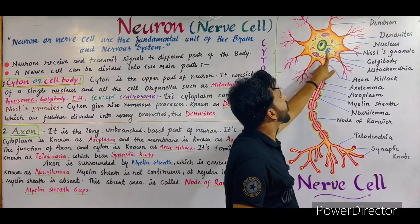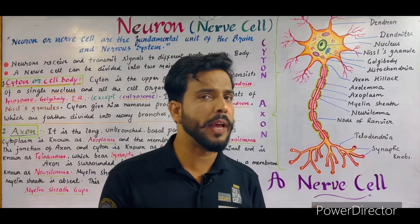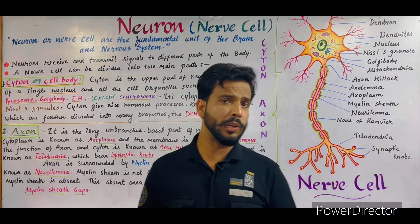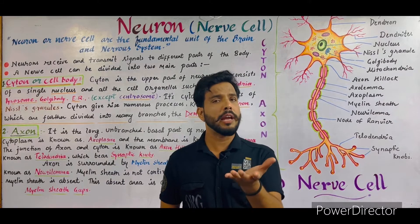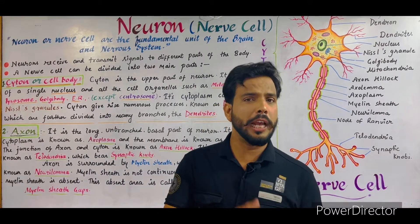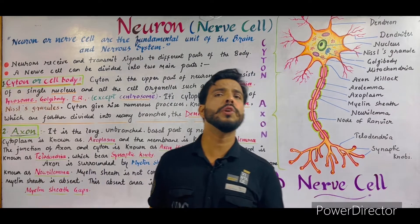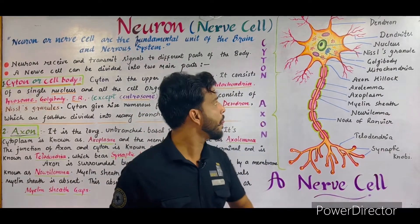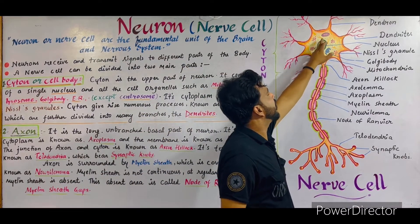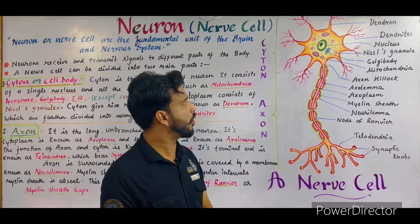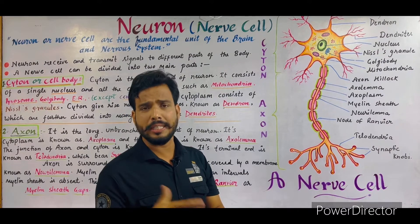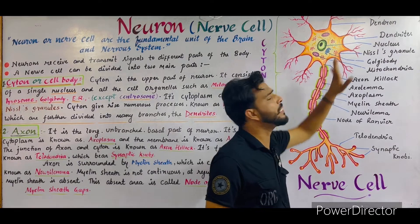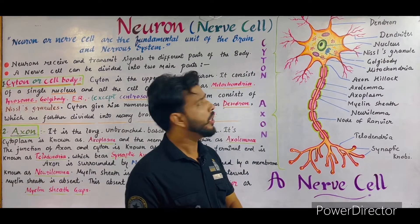Some important structures known as Nissl granules are also present in the cytoplasm of the neuron. These Nissl granules are made up of ribosomes and endoplasmic reticulum. Generally, ribosomes are the protein factories — they help in the process of protein synthesis. So the function of Nissl granules is to help in protein synthesis. Also present are neurofibrils in the cytoplasm of the cytone. The cytone is also known as soma, the cell body, or the perikaryon.